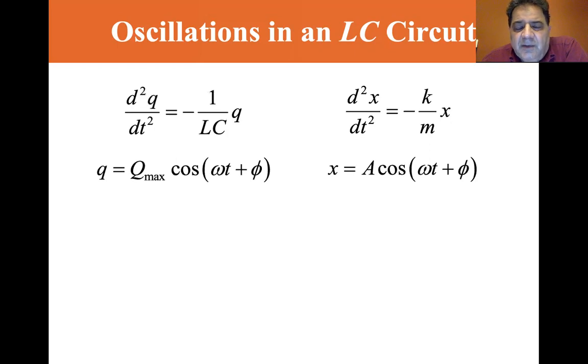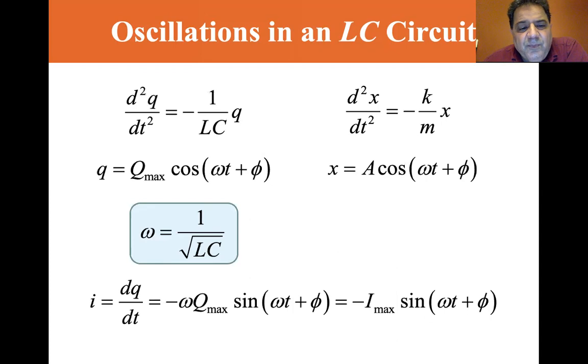Well, the charge is the same as x, and q max is the max charge, cosine omega t plus phi, where omega in this case equals 1 over the square root of LC. And the current equals minus omega. If q equals q max cosine omega t plus theta, you take the derivative of cosine and end up with minus omega sine omega t plus phi, so you end up with minus i max times sine omega t plus phi.